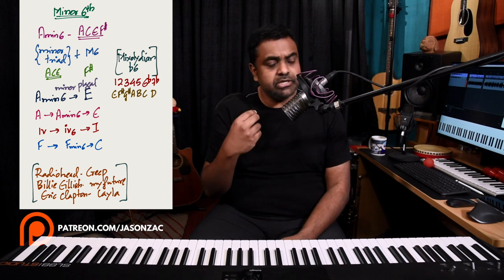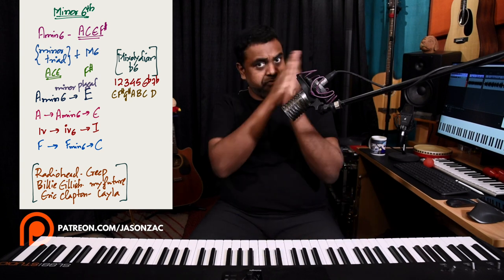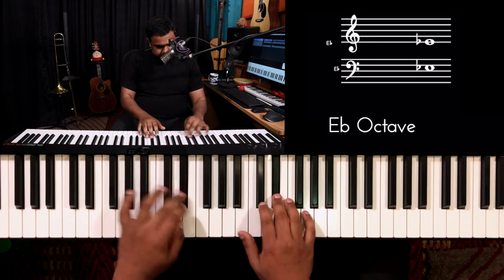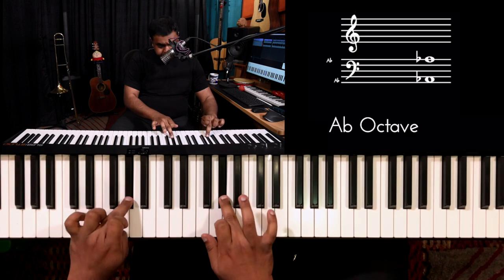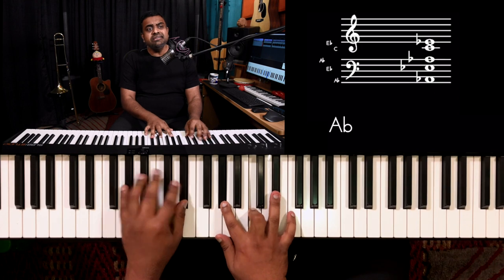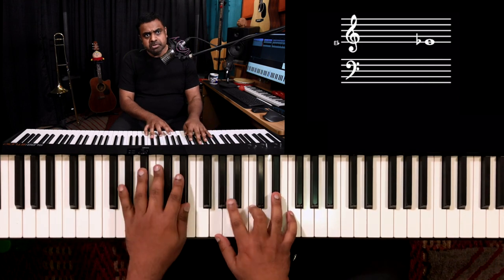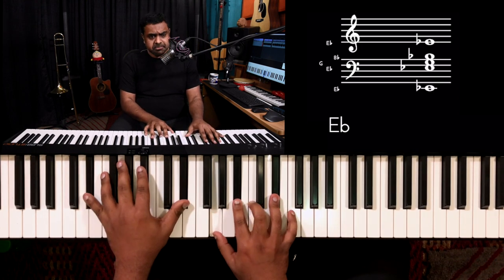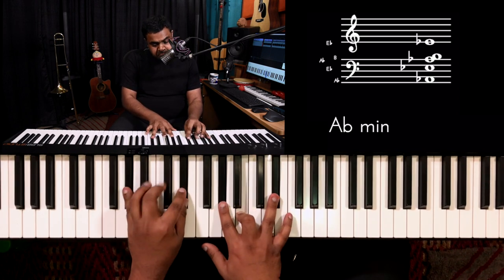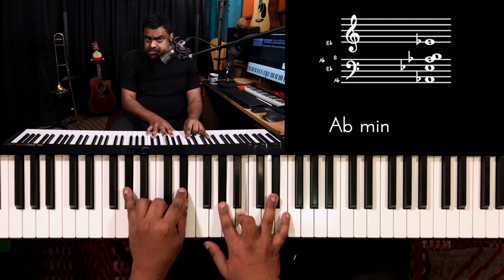I use it in a very traditional way — I don't think I have a very different way of using it, but it's just something to know. What I'd like to add is: it is the four of the one, so if you're in the key of E-flat, the four is A-flat. Traditionally in the E-flat scale, we go A-flat major going to E-flat.